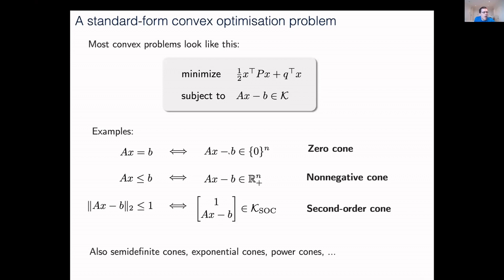You can do other more exotic things, like you can have bounds on the two norms of things that gives you a second-order cone program. We've done semi-definite cones, exponential cones, power cones, and a few others. Most convex optimization problems can be written like this, and we want to provide a general purpose solver for solving them.